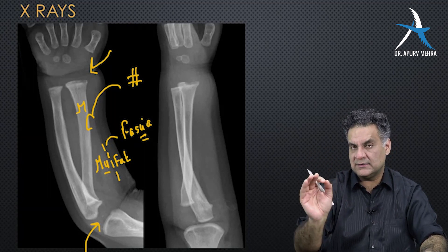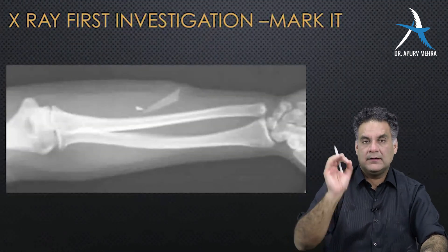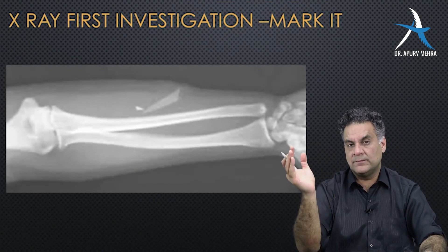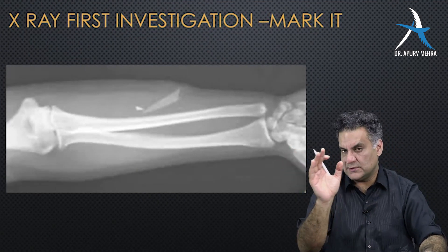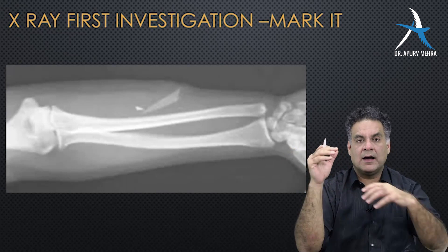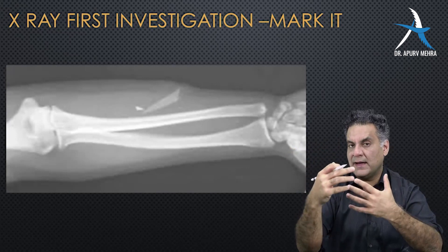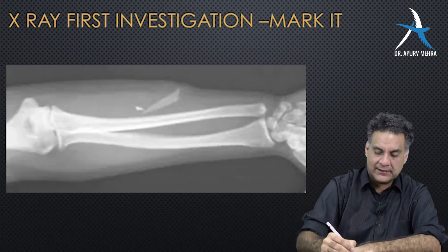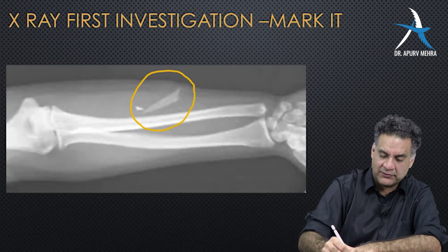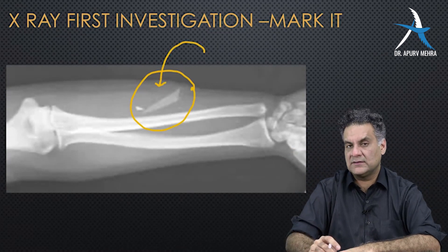One more thing X-ray can show you is anything which is radiopaque. Glass pieces are coated with lead at the back, which is why X-ray is often the first investigation used to pick up glass pieces.